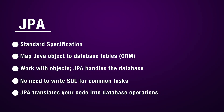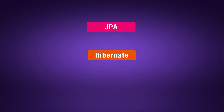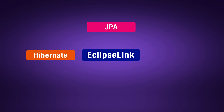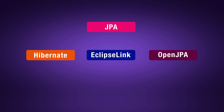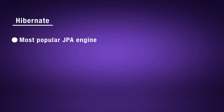However, JPA is just a specification — a set of rules and interfaces. It does not provide the actual implementation code. To use JPA, you need a provider that implements the specification. There are many implementations available. Hibernate is one of them and the most popular one. There are also other popular implementations like EclipseLink and OpenJPA. As mentioned, Hibernate is the most popular implementation of the JPA specification. It is the engine that brings JPA to life.